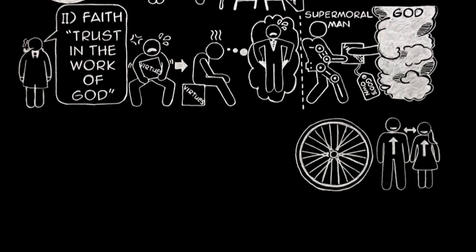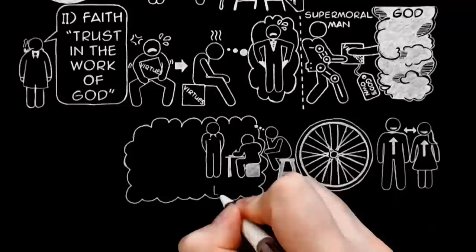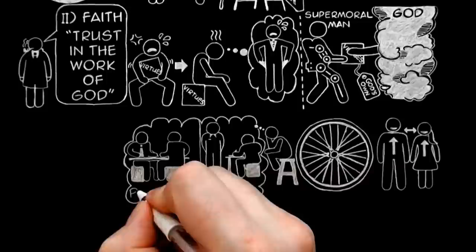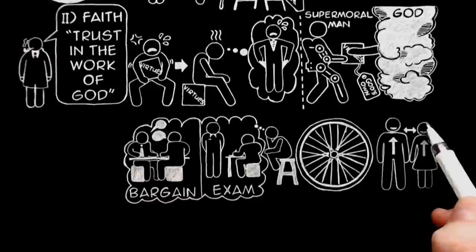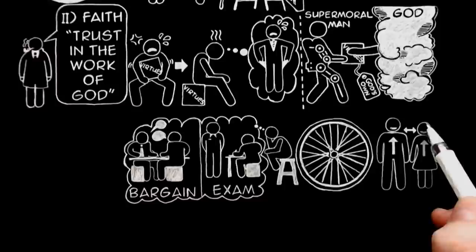And as long as a man is thinking of God as an examiner who has set him a sort of paper to do, or as the opposite party in a sort of bargain, as long as he is thinking of claims and counterclaims between himself and God, he is not yet in the right relation to him. He is misunderstanding what he is and what God is, and he cannot get into the right relation until he has discovered the fact of our bankruptcy.